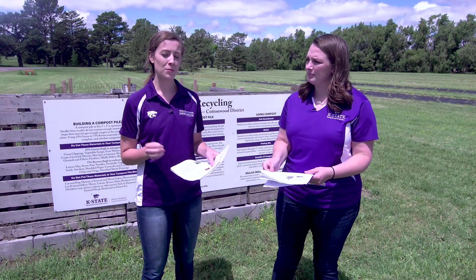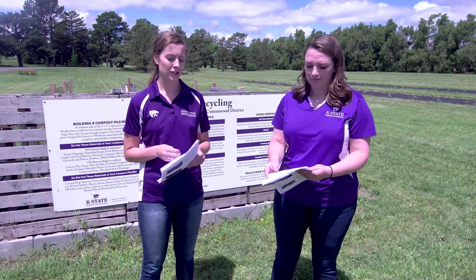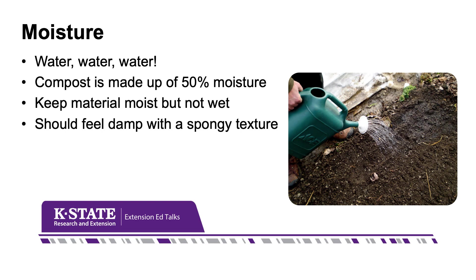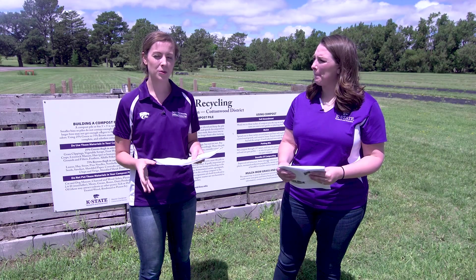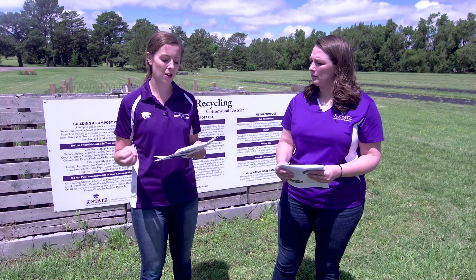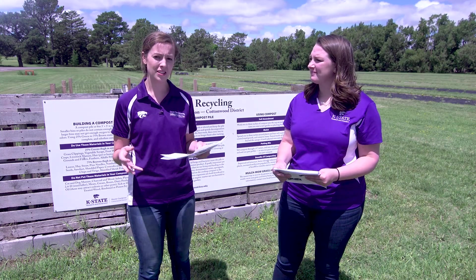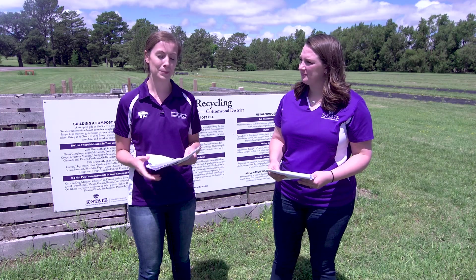Another really important tip is to add moisture. During dry seasons, especially in July and August, if it's not raining you need to add water to your pile. Compost should be made up of about 50% water. You want the materials moist but not wet — when you touch your pile it should feel like a damp sponge, not soggy.